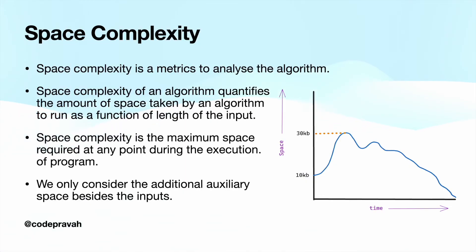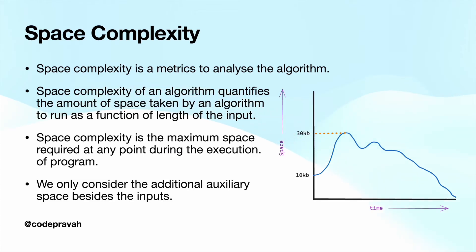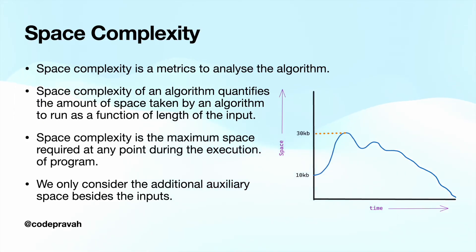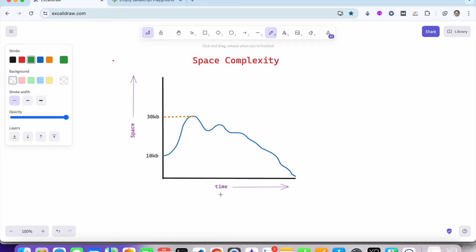Now let's talk about space complexity — the second metric to decide the goodness of an algorithm. Space complexity quantifies the amount of space taken by an algorithm to run as a function of the length of input. It tells you how much space is being used when running a program with input size n. We only consider auxiliary additional space, excluding the inputs. While running code, memory consumption may vary; we choose the highest memory consumption at any point — that is the space complexity.